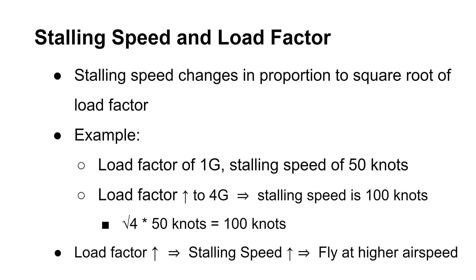The stalling speed and load factor have a proportionate relationship with each other. In particular, the stalling speed increases in proportion to the square root of the load factor. Consider an aircraft with a stalling speed of 50 knots in a normal, unaccelerated flight. The same aircraft will stall at an airspeed of 100 knots by inducing a load factor of 4 Gs. You calculate the stalling speed of 100 knots by taking the square root of 4 and multiplying it by 50 knots. Therefore, higher load factors require higher airspeeds to avoid stalls.